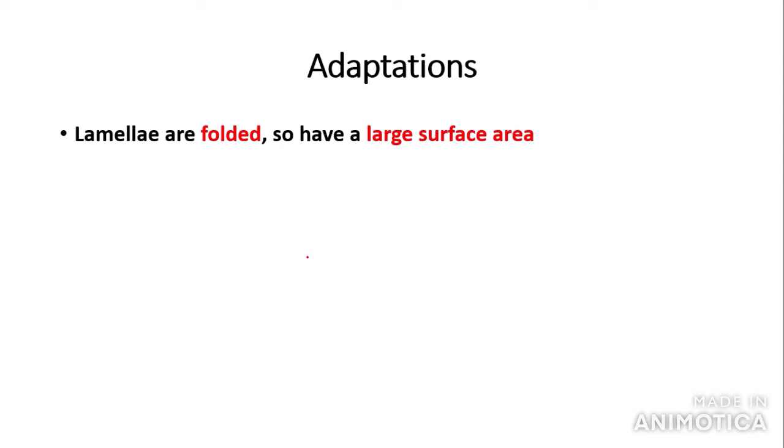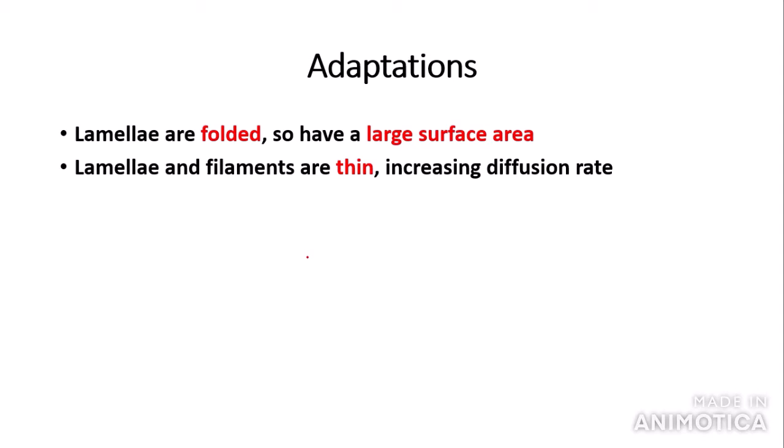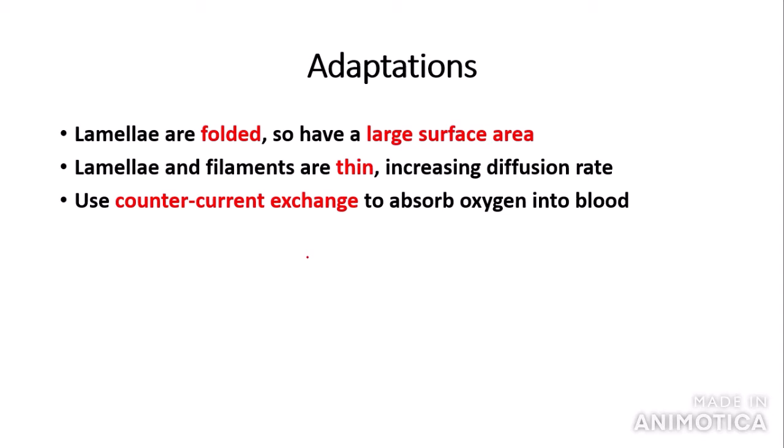Here are some adaptations of fish gills. The lamellae are folded to provide a large surface area, increasing the rate of diffusion of oxygen from the water to the blood. The lamellae and filaments are thin, which increases diffusion rate as the length of the diffusion path is shorter — as we saw from Fick's law. Fish also use the counter-current exchange principle to absorb oxygen from the water into the blood. The counter-current exchange principle is when oxygen in the water and blood flow in opposite directions.